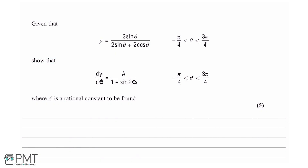We are told: given that y equals 3 sine theta over 2 sine theta plus 2 cosine theta, show that dy/dθ equals a over 1 plus sine 2θ, where a is a rational constant to be found.